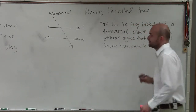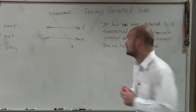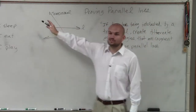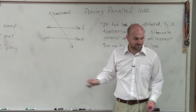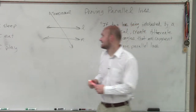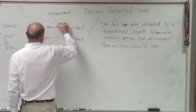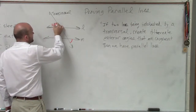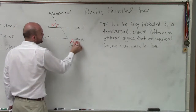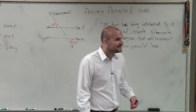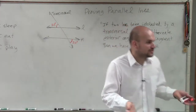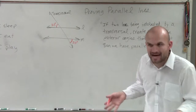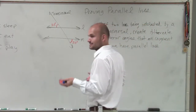So again, ladies and gentlemen, what they're saying is: if we have two lines being intersected by a transversal and we have alternate exterior angles, and those alternate exterior angles are equal in value, then we know we have to have parallel lines.